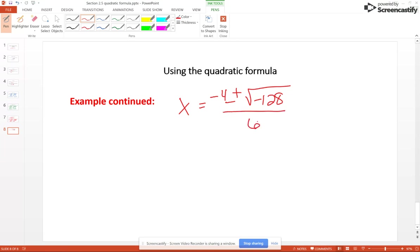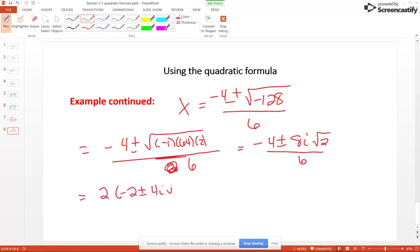So what we have is x equals negative 4 plus and minus the square root of negative 128 over 6. Now negative 128 is negative 1 times 64 times 2 all over 6. So negative 4 plus or minus 8i square root of 2 over 6, and you will be required to factor out that 2 that they have in common up in the numerator because it will cancel with the denominator. So 2 goes into 6 three times, so we're going to get negative 2 plus or minus 4i square root of 2 over 3, and if you have to break that up into separate terms: negative 2 thirds plus or minus 4 thirds i square root of 2.